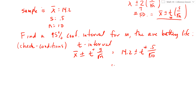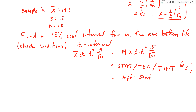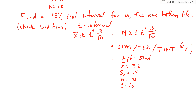On my calculator, I go to STAT, TESTS, T Interval — that's number 8. What you put in: Input as Stats, X̄ = 14.2, Sx = 0.5, N = 10, C-Level = 0.95, then Calculate. If you do all of those things, you're going to get 13.8 comma 14.6 — I rounded those.